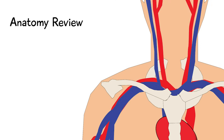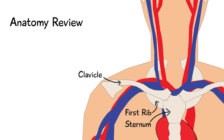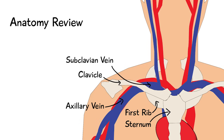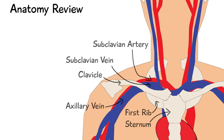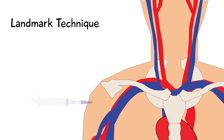Now we will review pertinent anatomy. The main bones to identify are the clavicle, sternum, and first rib as depicted in this diagram. Venous drainage of the upper extremities joins into the axillary vein, which becomes the subclavian vein as it passes the lateral edge of the first rib, posterior to the clavicle. The subclavian artery is usually posterior and superior to the subclavian vein. With traditional landmark technique, the introducer needle is inserted close to the bend of the clavicle, usually aiming towards the sternal notch at the superior border of the sternum. The needle is parallel to the skin after being fed underneath the clavicle in order to access the subclavian vein with minimal chance of pneumothorax.